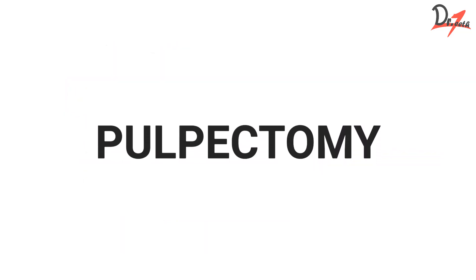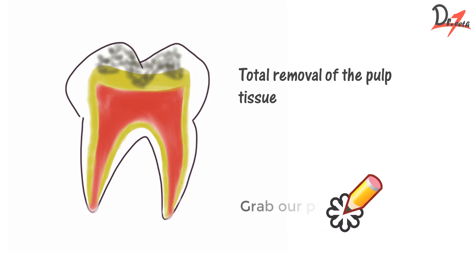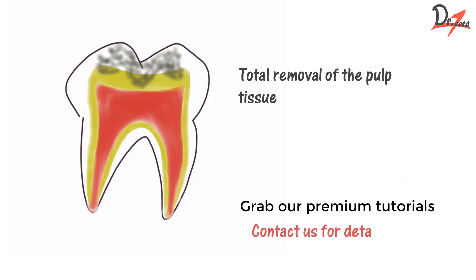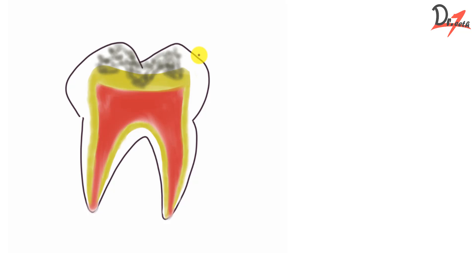Now let us move on to pulpectomy. As mentioned, it is the total removal of the pulp tissue, which in the case of primary teeth is difficult to achieve — hence the term pulp canal treatment. This is similar to root canal treatment, except that here we use a resorbable material to obturate, because in primary teeth we don't want the material to remain when the root resorbs. We want the material to resorb in accordance with the timing of root resorption.